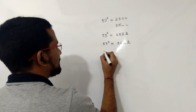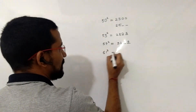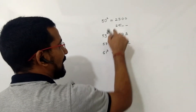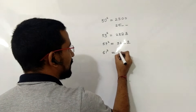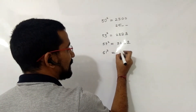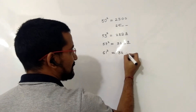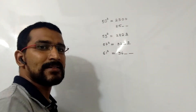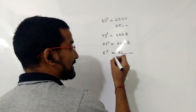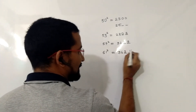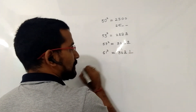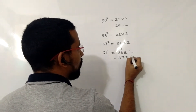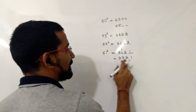Another example: 61 squared. 61 is 11 more than 50, so I will add 11 to 25, giving 36. The last two spaces should be filled by 11 squared, which is 121. Since it is a 3-digit number, I write 21 in the last two spaces and carry the 1 forward. So the answer is 3721.